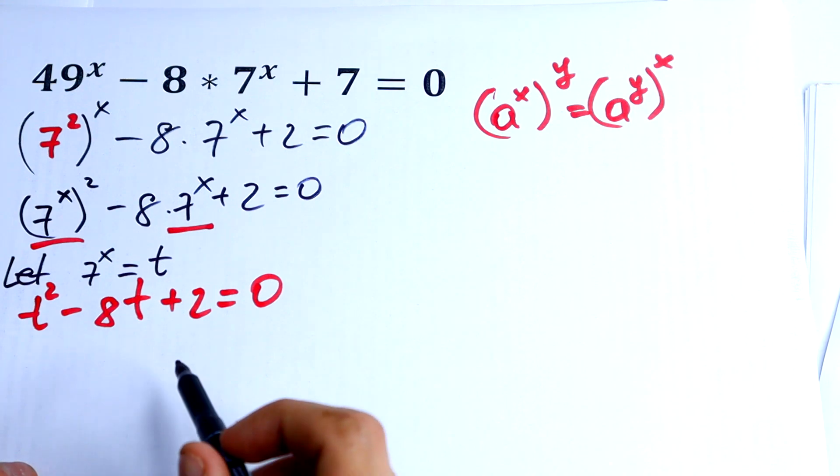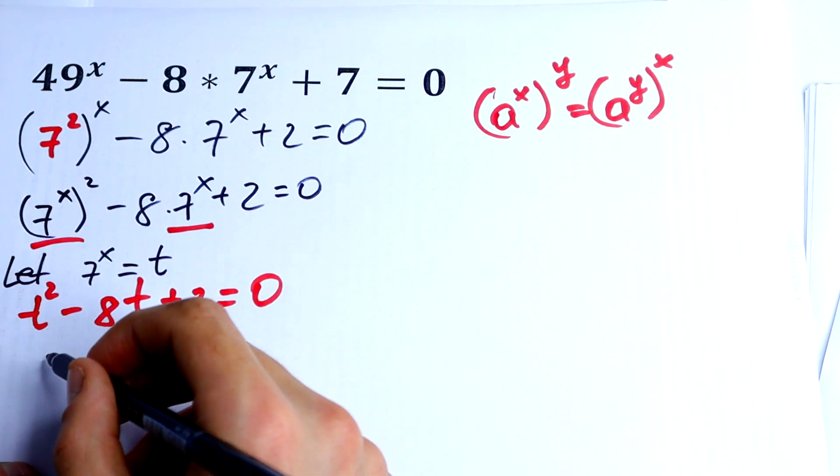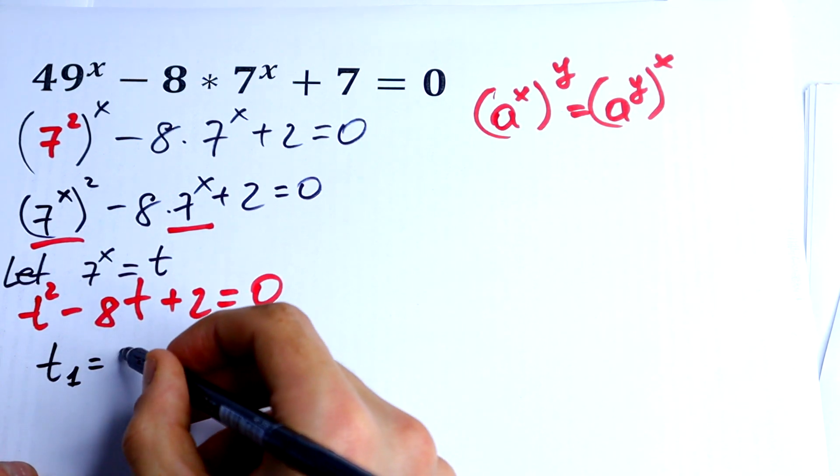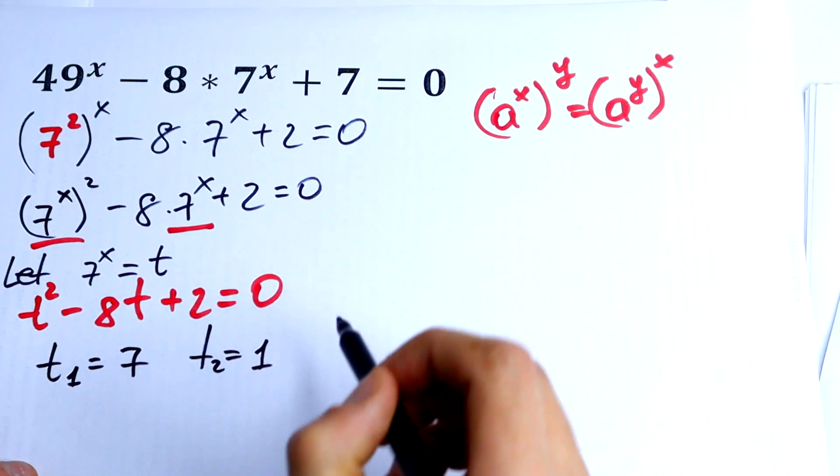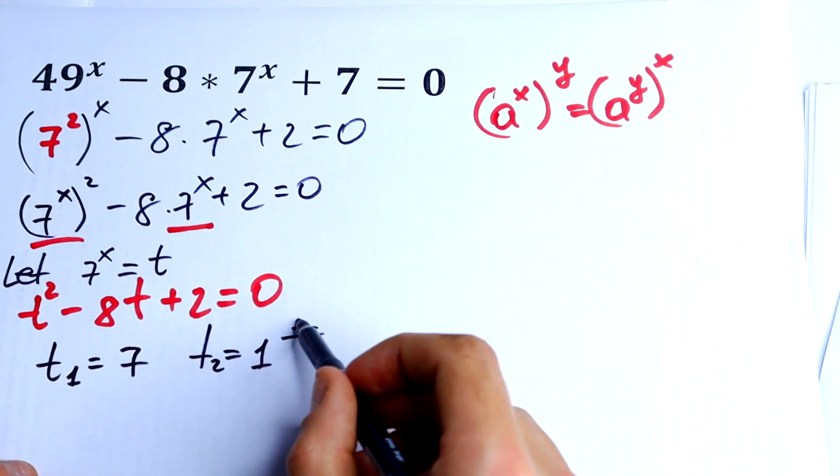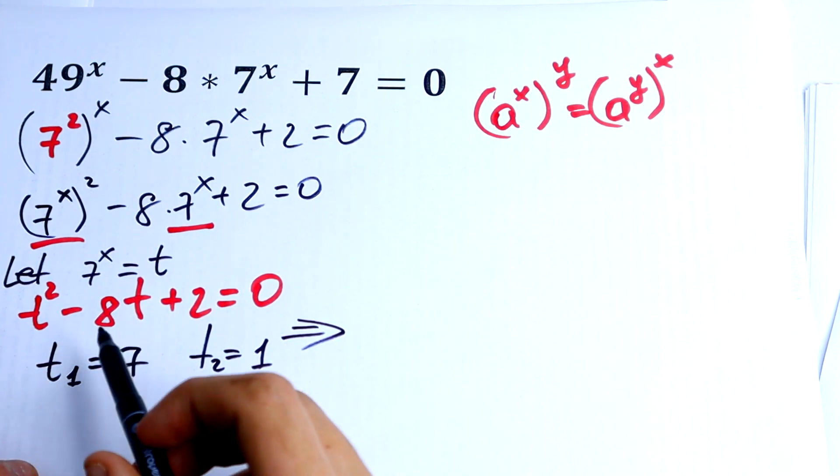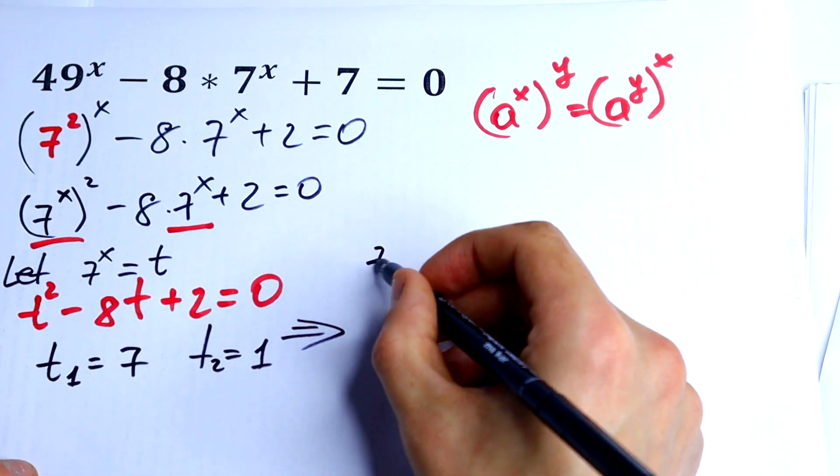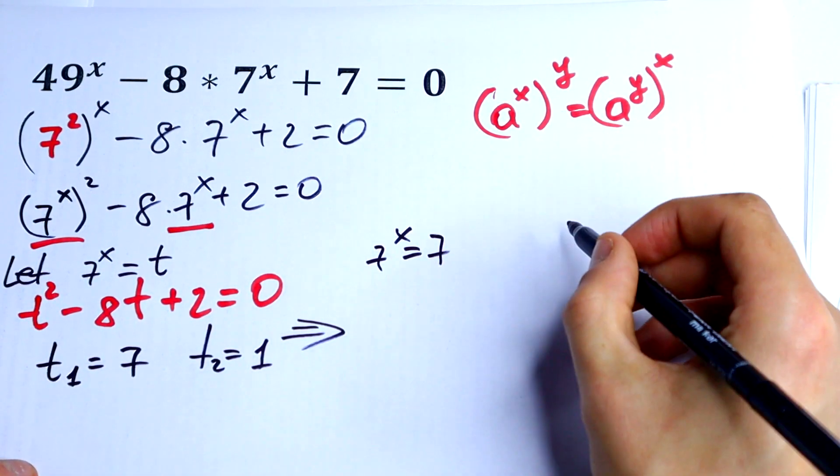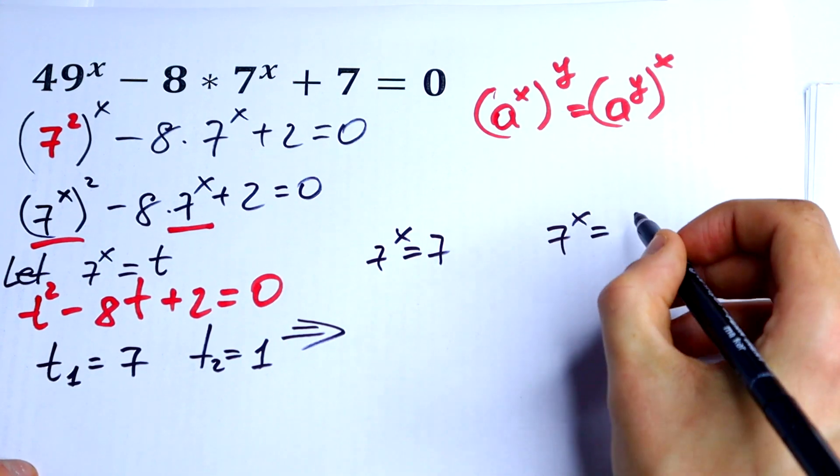So this is not hard. First, t1 would be equal to 7. t2 would be equal to 1. So we will have two equations: 7 to the power x equal to 7, and 7 to the power x equal to 1.